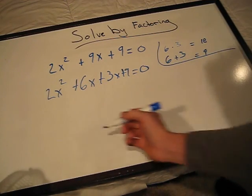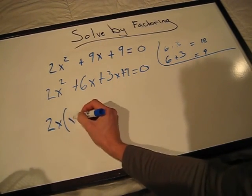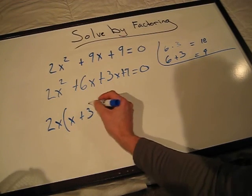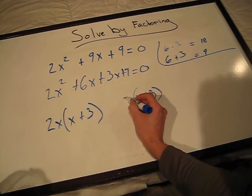Now we'll factor out what we can. We'll take out 2x times (x plus 3), and here it'll be 3 times (x plus 3).